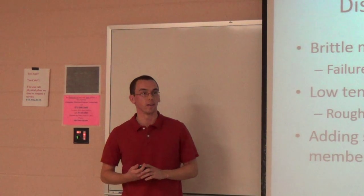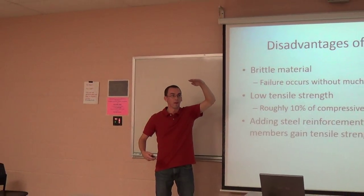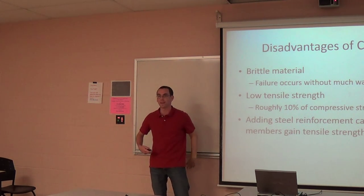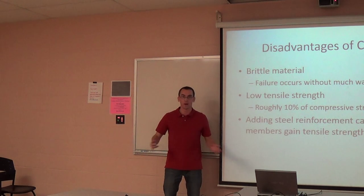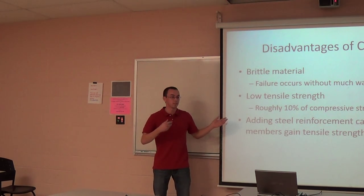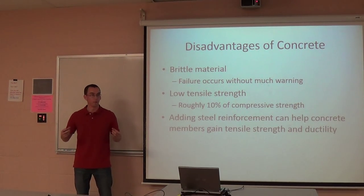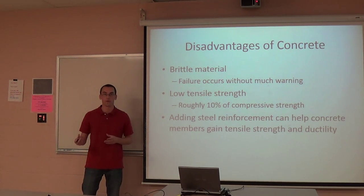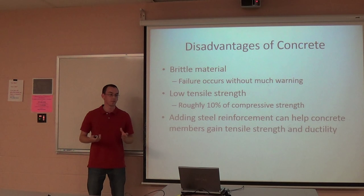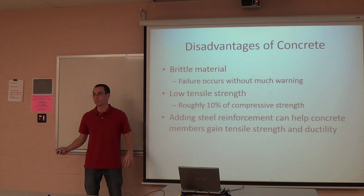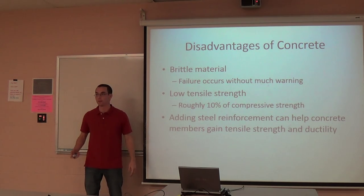But there are also disadvantages to concrete. One is that it's a brittle material. A brittle failure doesn't give you much warning when it's going to happen — it just collapses. You can mitigate that by adding reinforcing steel, which is a ductile material, meaning it will deform noticeably before it fails, giving you time to exit the structure. Concrete also has low tensile strength — only about 10% of the compressive strength. So if you have 4,000 PSI concrete, the tensile strength is only about 400 PSI, which is really not much when considering huge buildings and bridges.